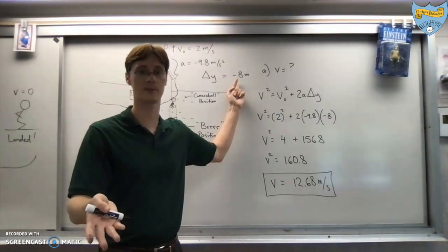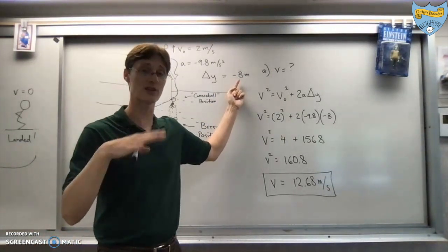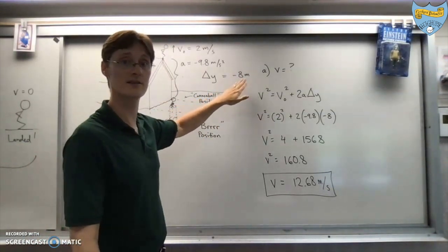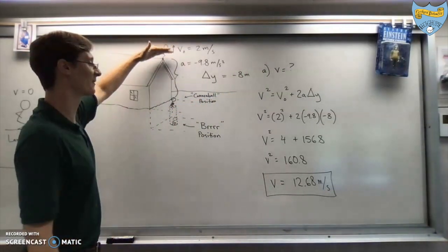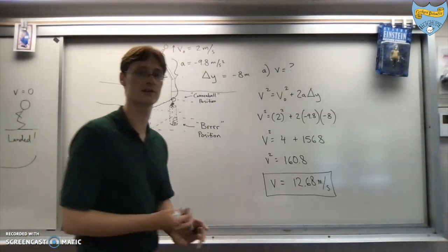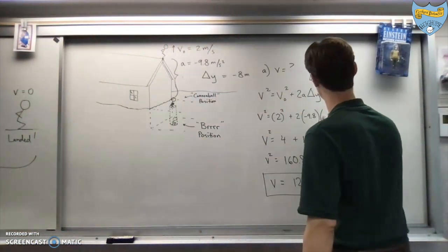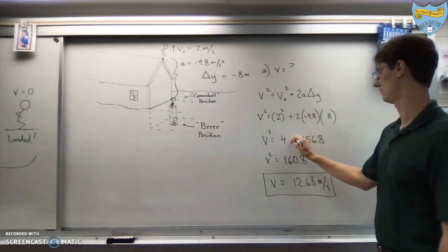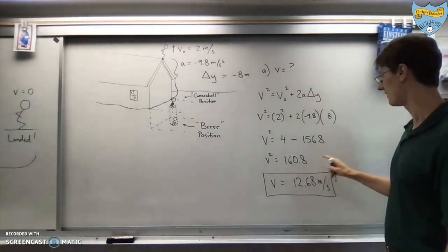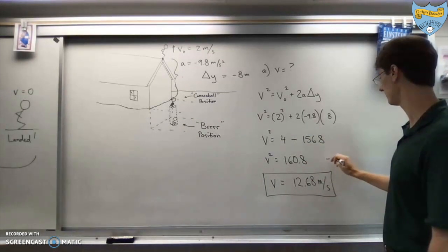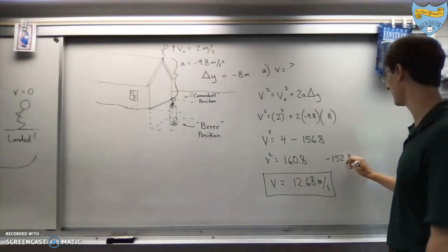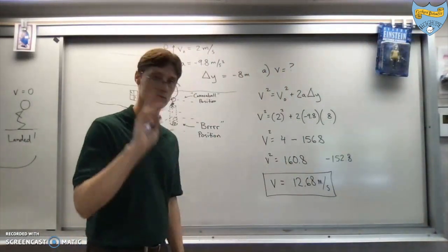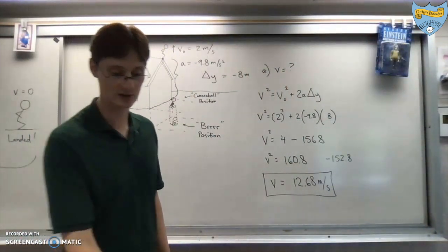So, if you did not realize that you had to call the displacement negative 8 because he goes downwards, then you would have not had that negative sign there. And then this would have said minus. And then you would have had negative 152.8 instead of 160.8.